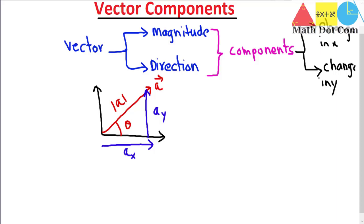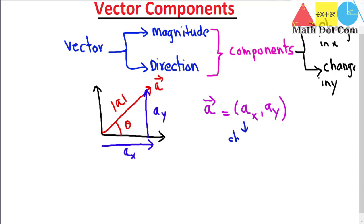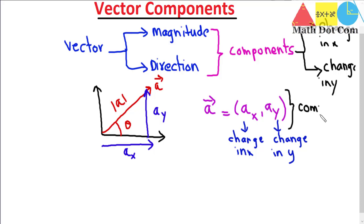So if we know either one, we can easily find the other. If we have a vector A in component form, we can write it as (Ax, Ay) — these are the components of vector A. Ax represents the change in x, and Ay represents the change in y. This is the component form of the vector.